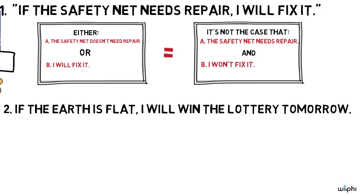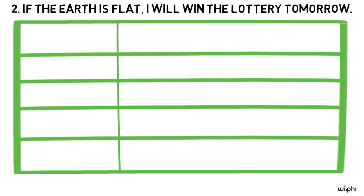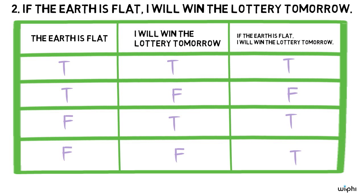Two. If the earth is flat, I will win the lottery tomorrow. Again, the material conditional theory doesn't care about what the antecedent and consequent of two mean, just what their truth values are. The truth table tells us everything there is to know about the meaning of two, according to the theory.